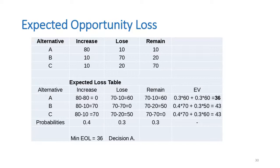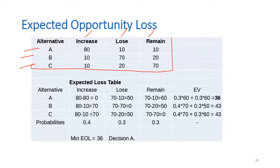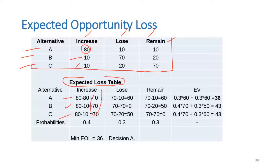Now let's talk about Expected Opportunity Loss (EOL). Given a payoff table with three states of nature and three alternatives — increase share, decrease share, remain the same — we first find the maximum value for each state of nature, then subtract the remaining payoffs from that maximum. For example, 80 minus 80 equals 0, 80 minus 10 equals 70, and so on to build the opportunity loss table.